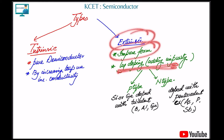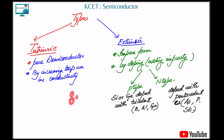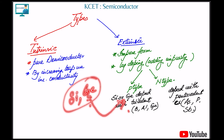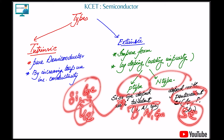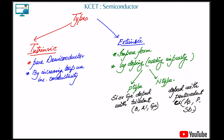Extrinsic is an impure form — here we do doping, adding impurity. For silicon or germanium, when doped with a trivalent element like boron, aluminium, or gallium, we get a p-type. When doped with a pentavalent element, which has five electrons compared to silicon's four, one extra electron creates an n-type. With a trivalent having three electrons, one extra hole is created, giving p-type. Holes are basically nothing but the absence of electrons.